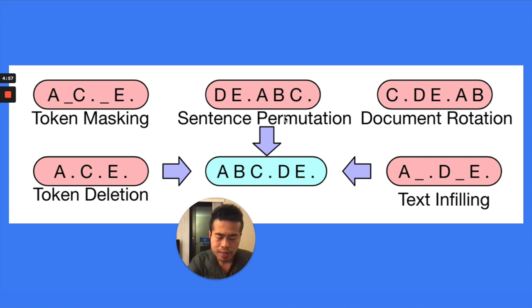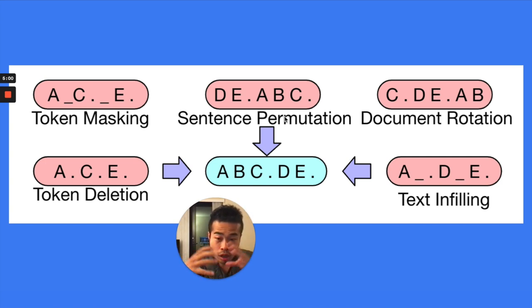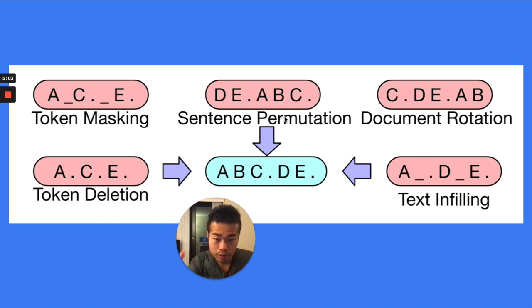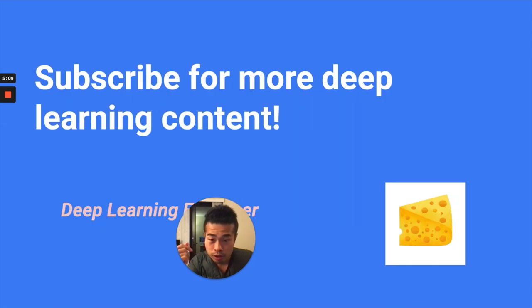That's why BART is very strong — because it learns a lot of different relationships between words. You can say its training schema is much harder than masked language modeling. So it's a very smart way to think about self-supervision.